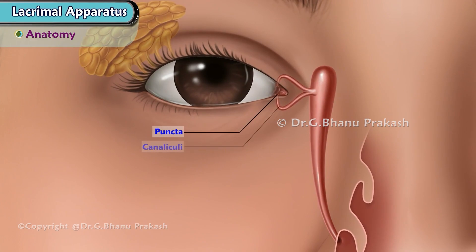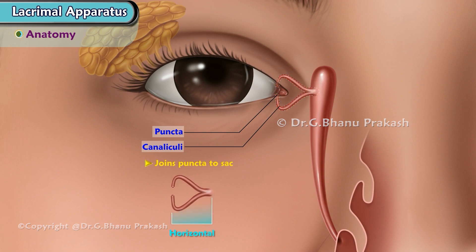Lacrimal Canaliculi joins the puncta to the sac. The lacrimal canaliculi has two parts: horizontal, measuring 5-6 mm, and vertical, measuring 1-2 mm.